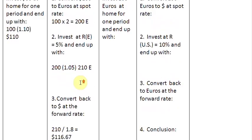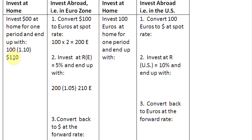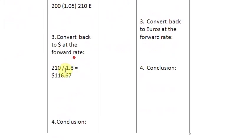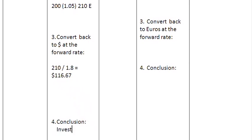Looking at the result: if you invested at home in the US, you made $110. And if you invest abroad in the Eurozone, you end up with $116.67. So you make some extra money by taking your money abroad. Therefore, the conclusion for this alternative is to invest abroad.